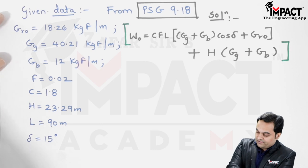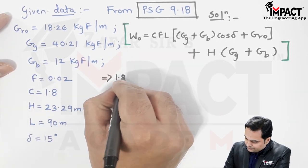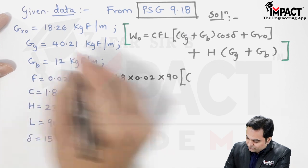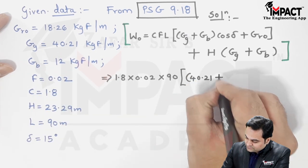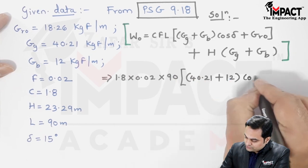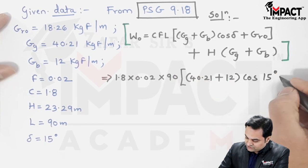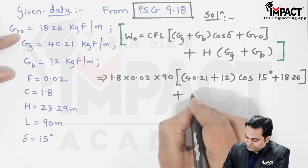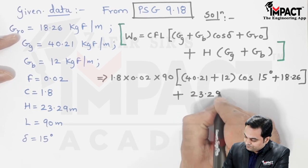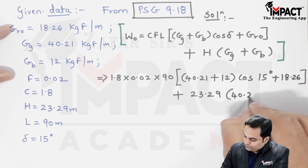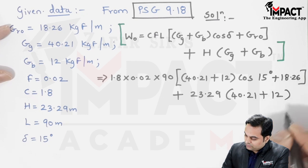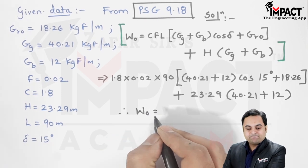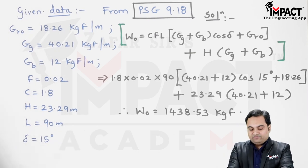So that's the formula of the resistance on the top run. Now just we are going to put the values. C value is 1.8, f is 0.02, l is 90, g suffix g is 40.21 plus g suffix b is 12, cos delta is 15 degree plus g_RO which is 18.26, plus capital H is 23.29, g suffix g plus g suffix b. So therefore on calculating this I am getting the answer of W suffix o which is 1438.53 kgf.